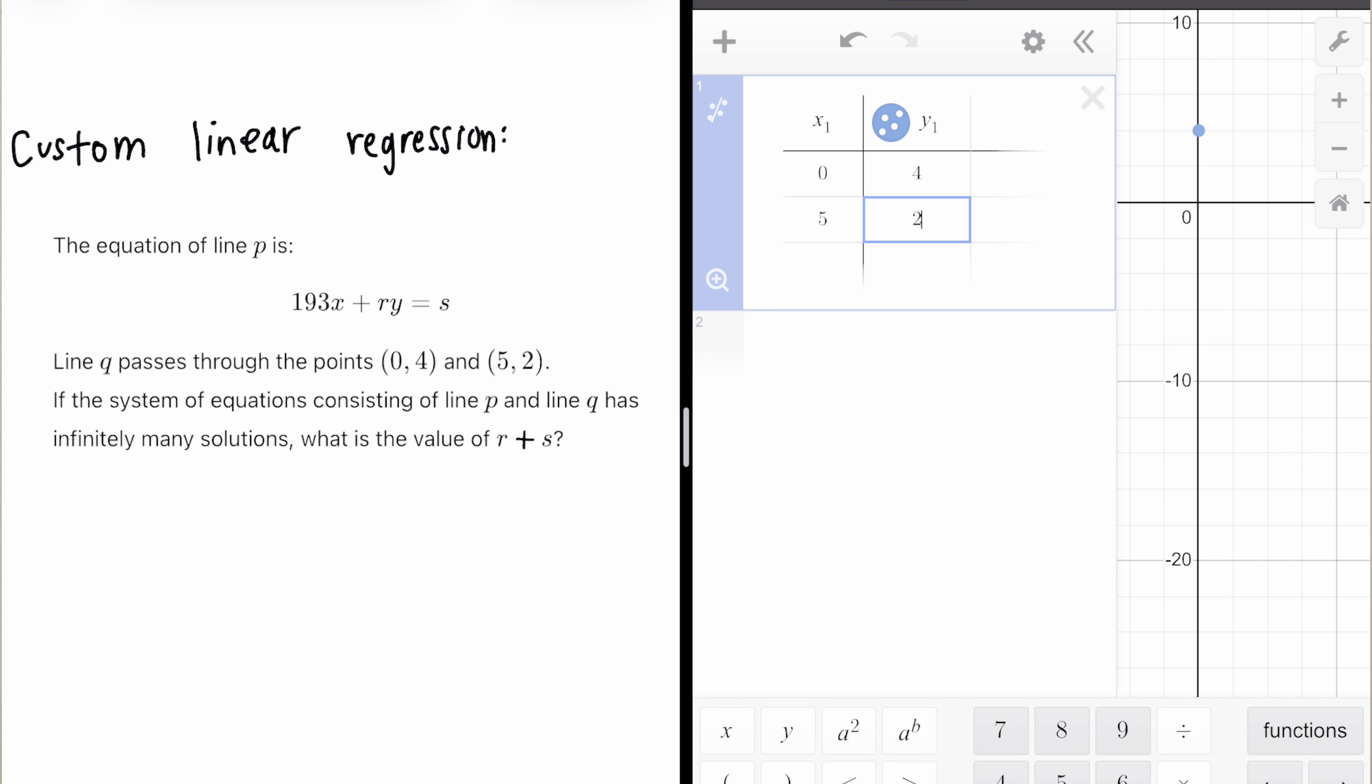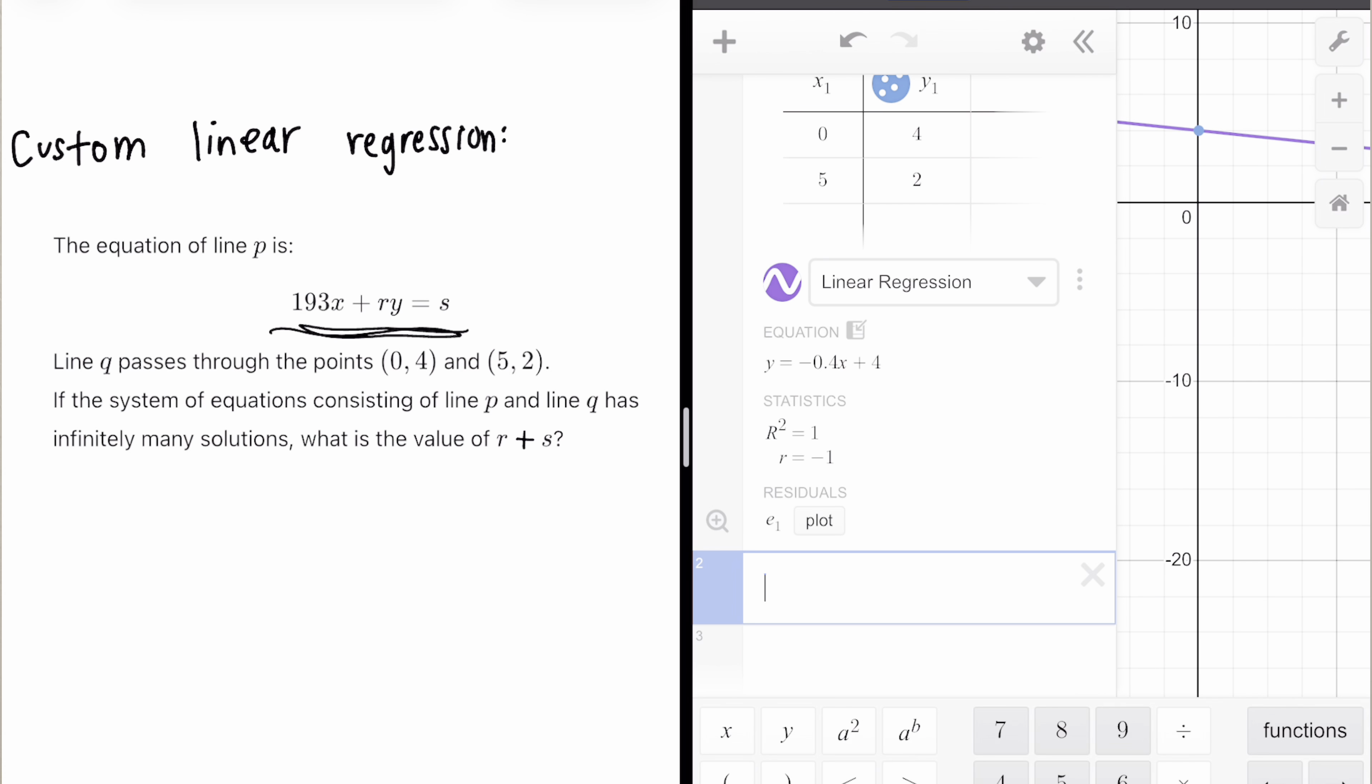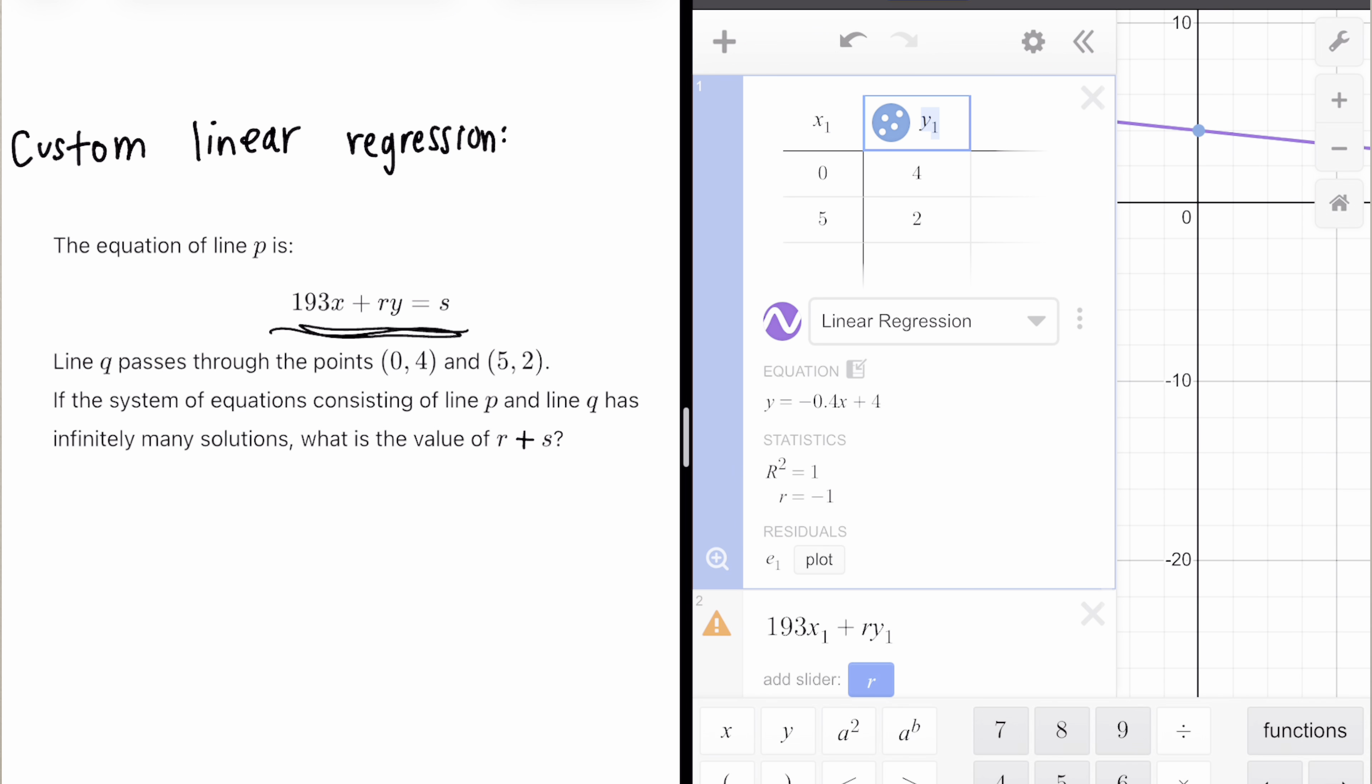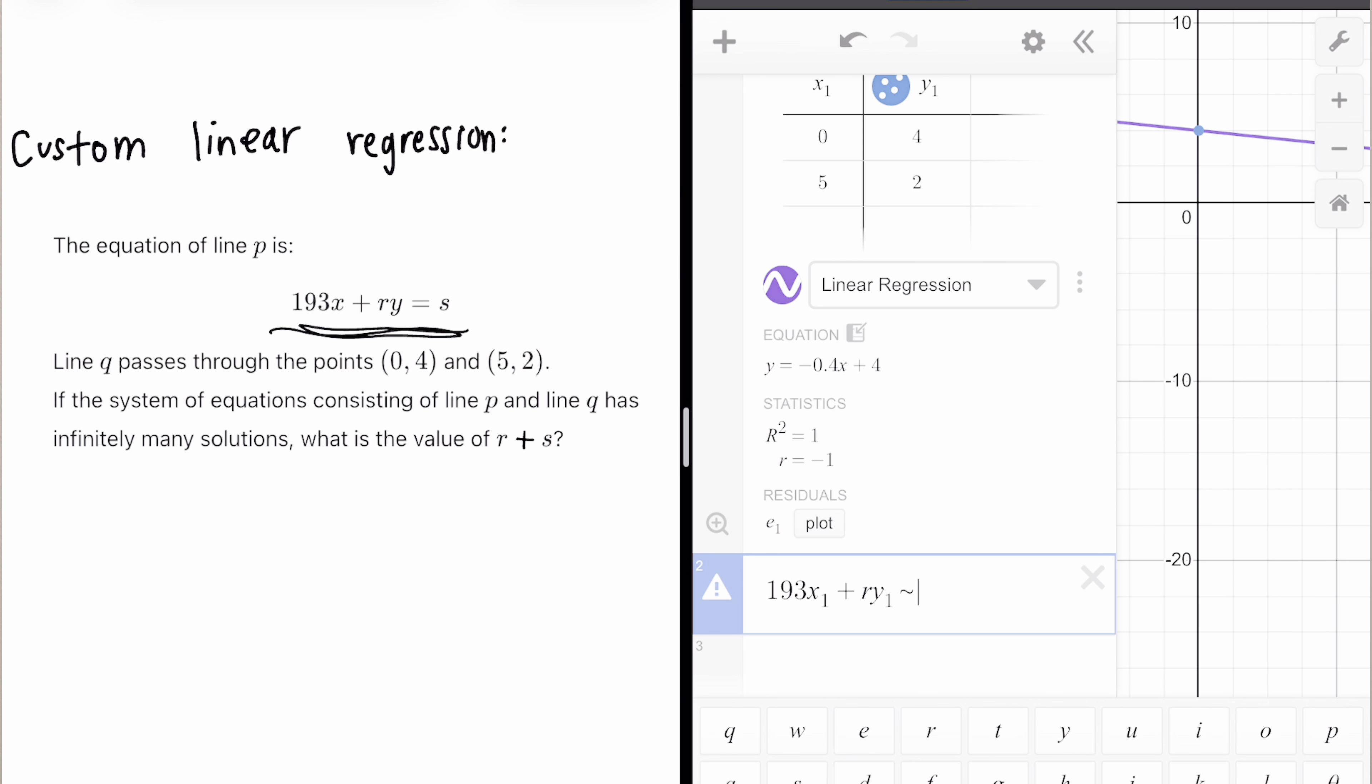And what we want to do from here is we don't necessarily want to click this button because the problem with this is this actually gives us Y equals MX plus B form. We want this form directly. Now what we want to do here, pay attention. This is important is 193X1. And how you get the X1 is literally X and then press one directly after it automatically makes it a subscript plus RY1. The reason that we're using X1 and Y1 in the first place is because X1 and Y1 are the X and Y headers of the table that we used. So we're basically telling Desmos to refer back to the table.